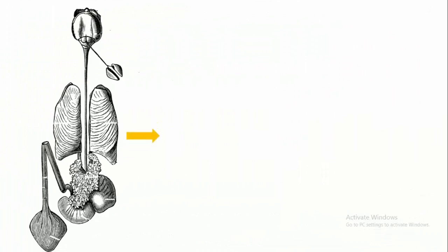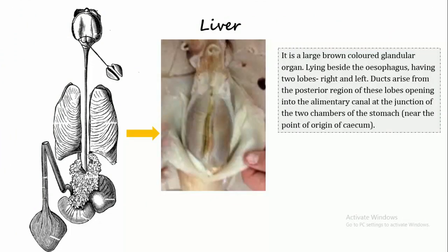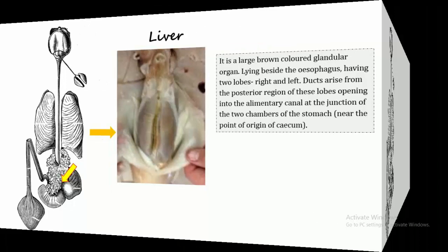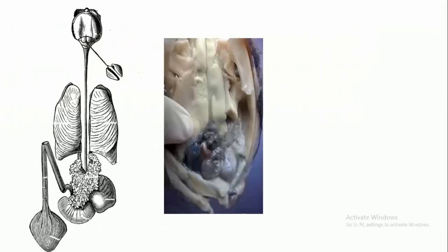The next gland is the liver. It is a large, brown colored, granular organ lying beside the oesophagus, having two lobes: right and left. Ducts arise from the posterior region of these lobes, opening into the alimentary canal at the junction of the two chambers of the stomach near the point of origin of the cecum. In this picture you can see the liver.